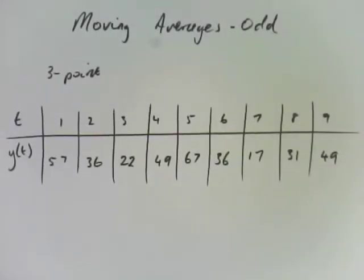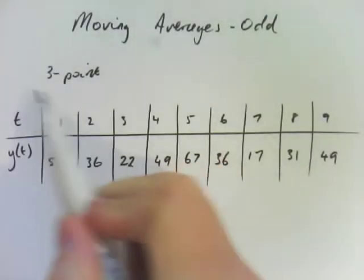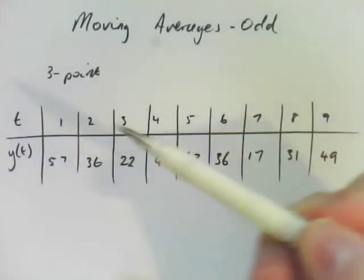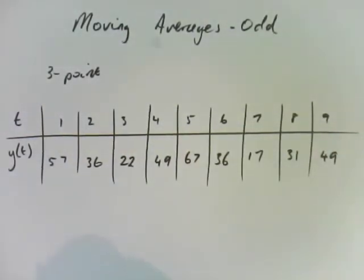Okay, moving averages are actually a very easy thing to do, particularly the odd ones. So this is for 4C in your textbook. Moving averages, odd number of points. We're going to do a three-point moving average, and we're going to do that in black, and then we'll do a couple of others in different colors.